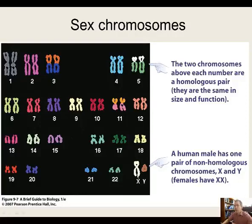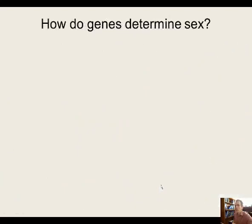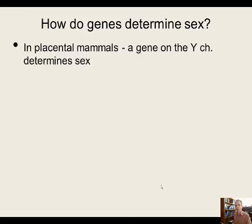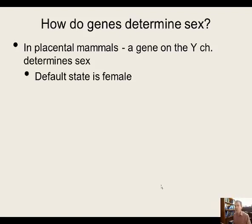In males there's an X and a Y, but in females there are two X's, and those are homologous pairs. The Y chromosome in mammals is the chromosome that makes males. In placental mammals, the gene on the Y chromosome that determines sex is called SRY.